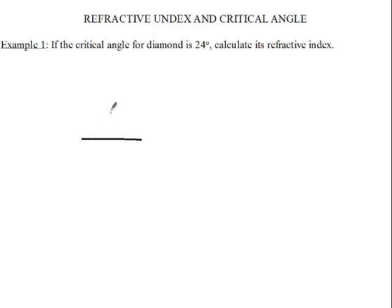So the critical angle is the angle that produces a refracted ray that is 90 degrees to the normal. So here, I will say there's my C, and there's my refracted ray, my incident ray.